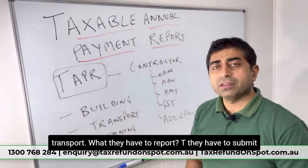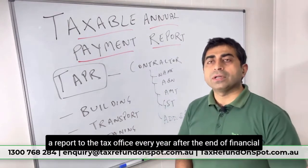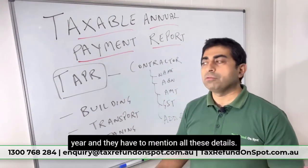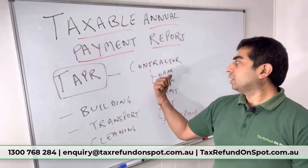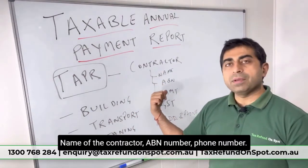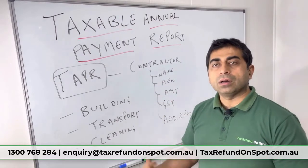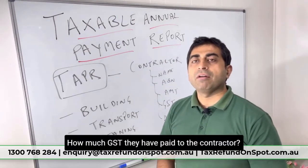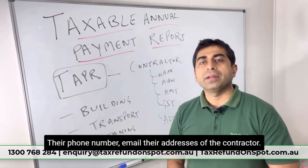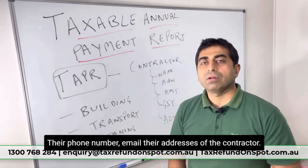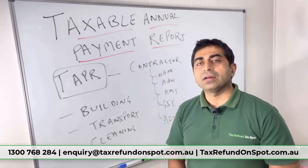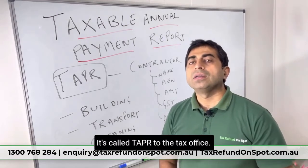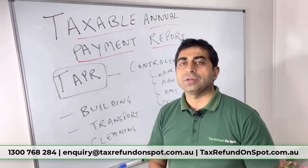What do they have to report? They have to submit a report to the tax office every year after the end of the financial year, and they have to mention all these details: name of the subcontractor, ABN number, phone number, total amount they have paid, GST — how much GST they have paid to the contractor — their email, and addresses of the contractor. These details they have to submit every year, and it's called TAPR.